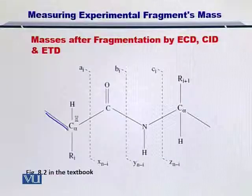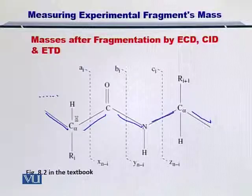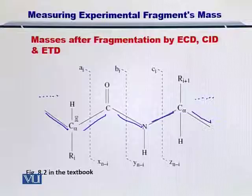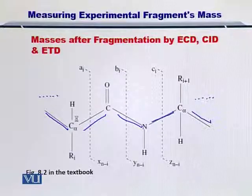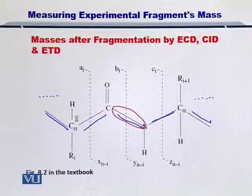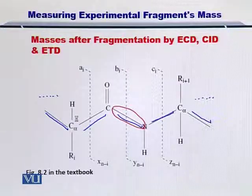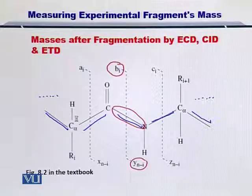Please consider this as the backbone of the protein. Of course the protein can be very long, but in this simple example we are just considering a situation where we have two amino acids only. You know that this bond is called the peptide bond. If the peptide bonds in the backbone of the protein are fragmented, then B and Y ions are reported.